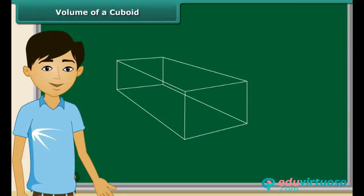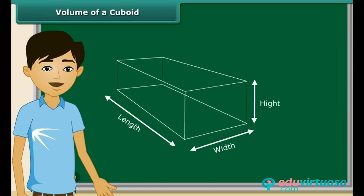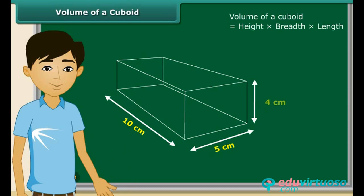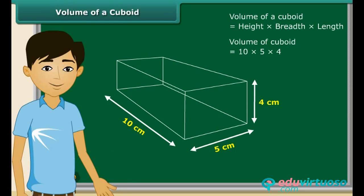Look at this cuboid. We know it is a three-dimensional shape having dimensions length, breadth, and height. To calculate the volume of a cuboid, simply multiply height, breadth, and length. The three dimensions are given. Multiplying all three numbers gives us the volume of this cuboid, which is 200 cm cube.